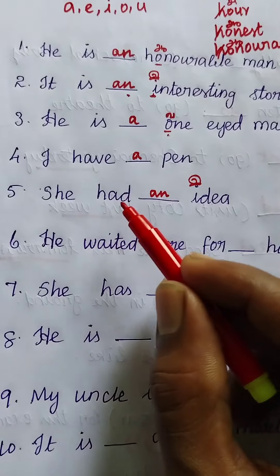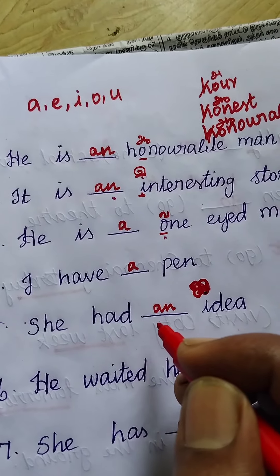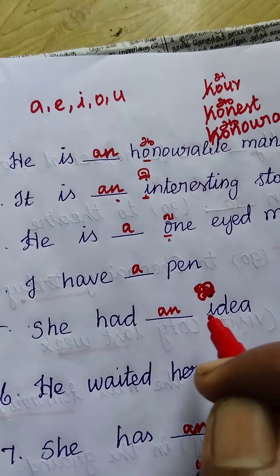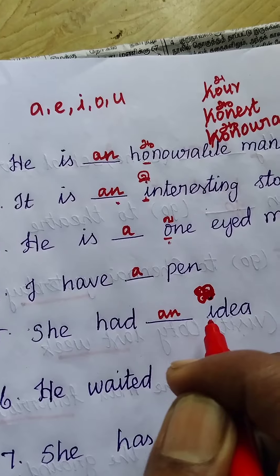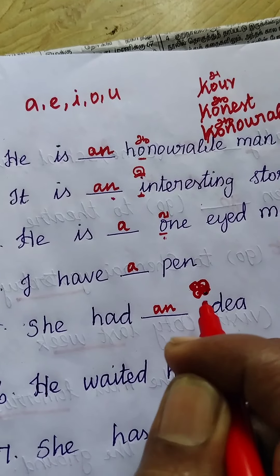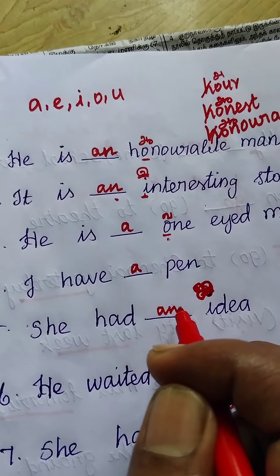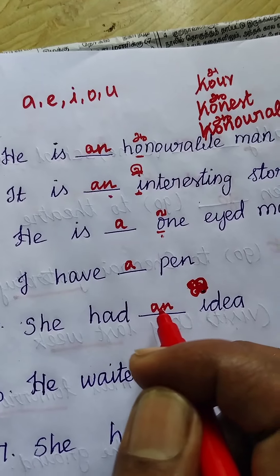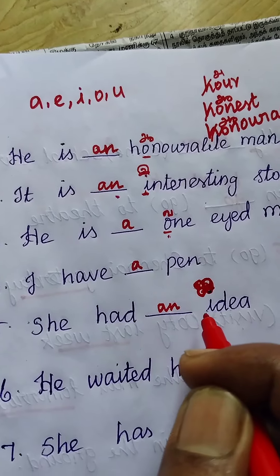Fifth example: 'She had ___ idea.' The first letter of 'idea' is I — a vowel letter with vowel sound. Hence the answer is 'She has an idea.'